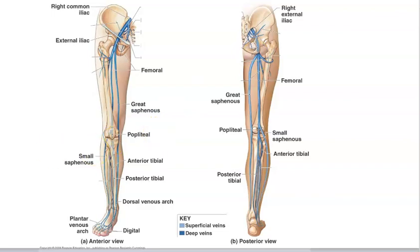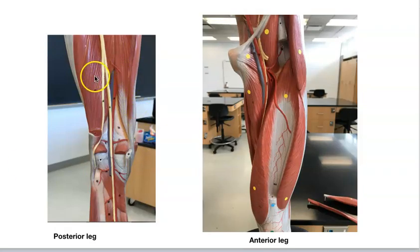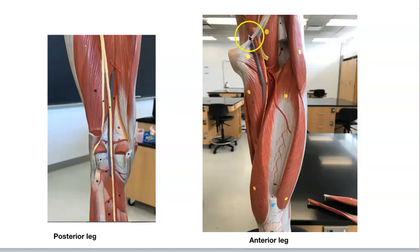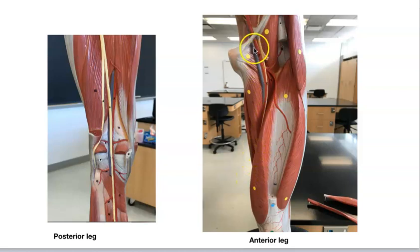On the model, the popliteal vein and popliteal artery are visible together. The popliteal vein passes through the adductor hiatus. At the inguinal ligament on the anterior leg, the external iliac artery and external iliac vein pass underneath to become the femoral artery and femoral vein, with the femoral vein directing blood upward.